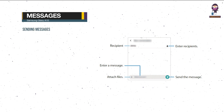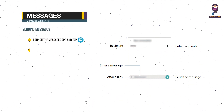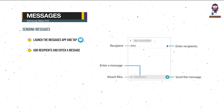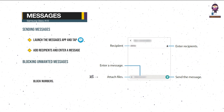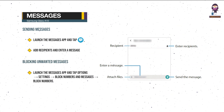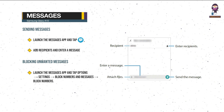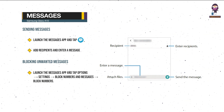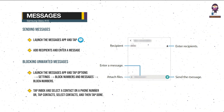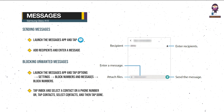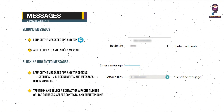Messages — Sending Messages: launch the Messages app, tap Add Recipients and enter a message. Blocking Unwanted Messages: launch the Messages app and tap Options, Settings, Block Numbers and Messages, Block Numbers. Tap Inbox and select a contact or a phone number, or tap Contacts, select contacts, and then tap Done.